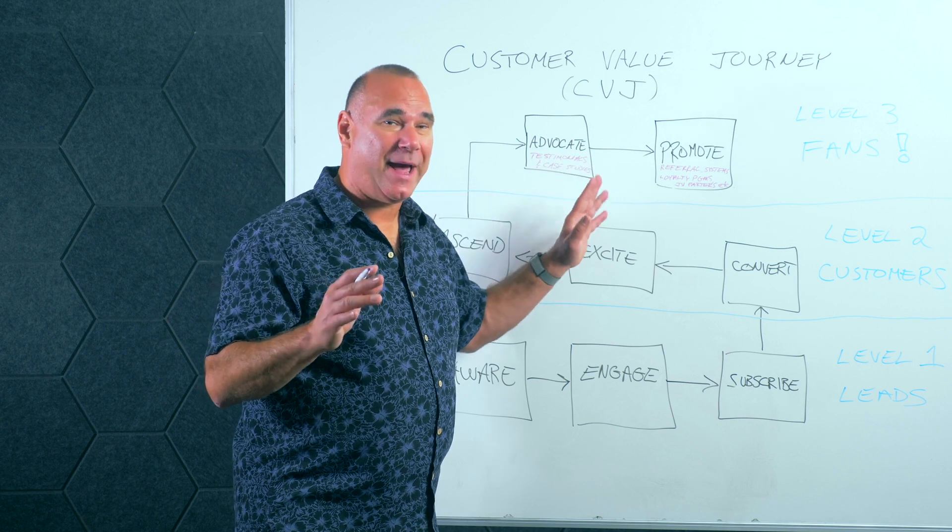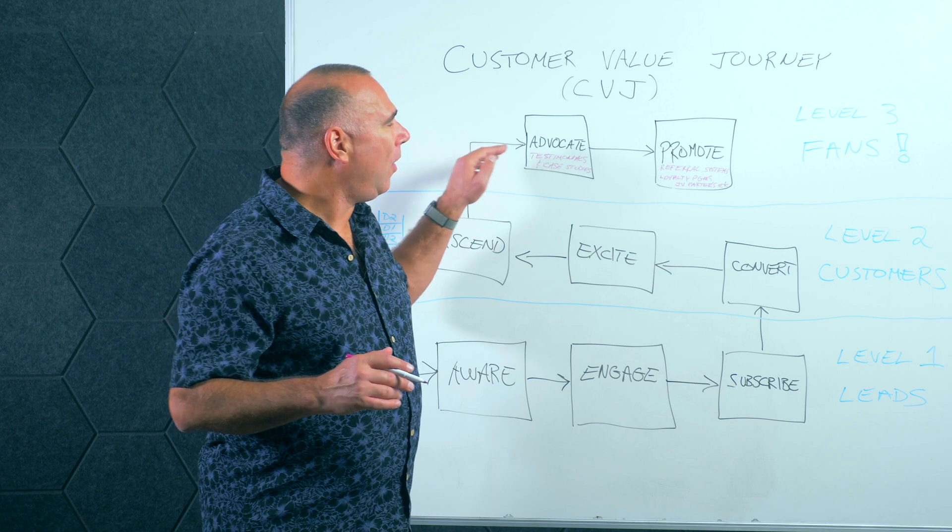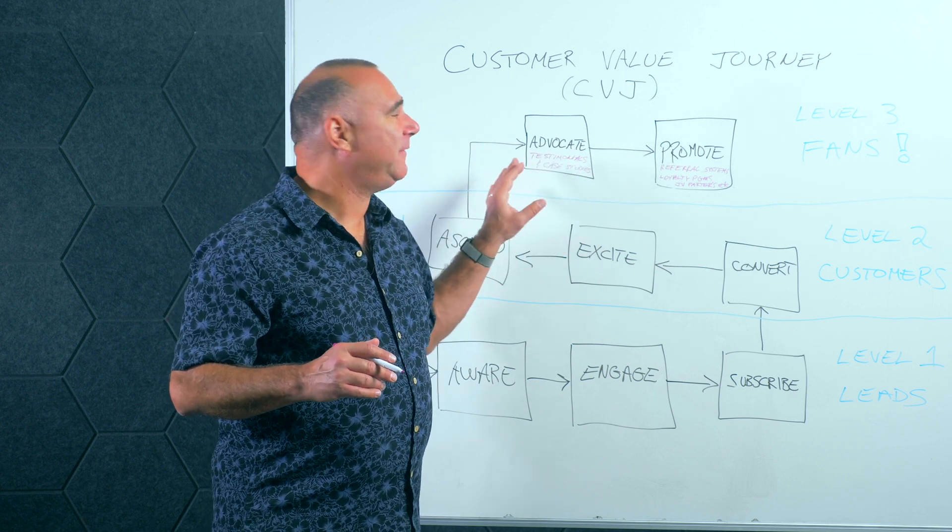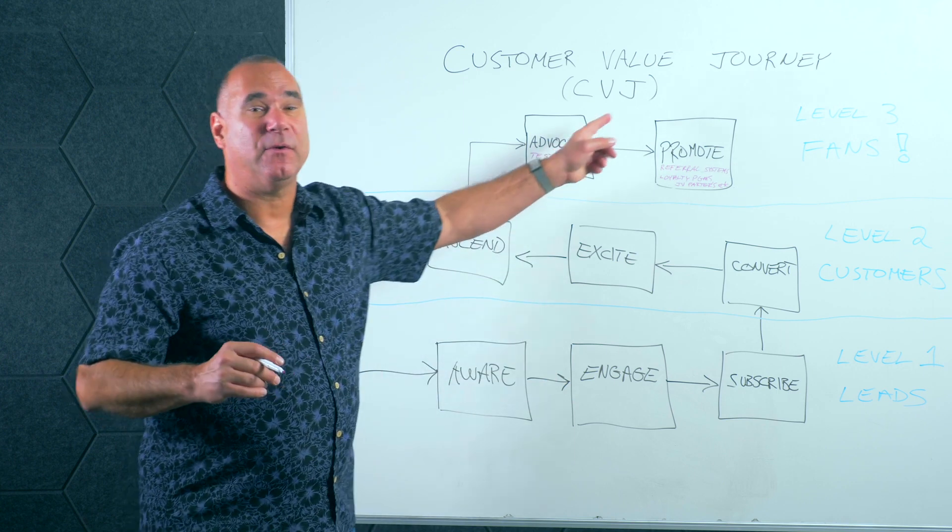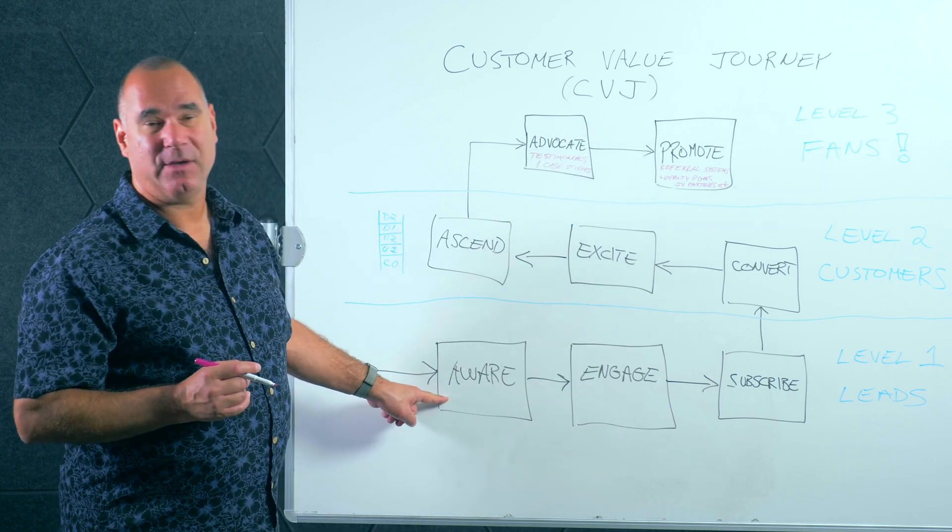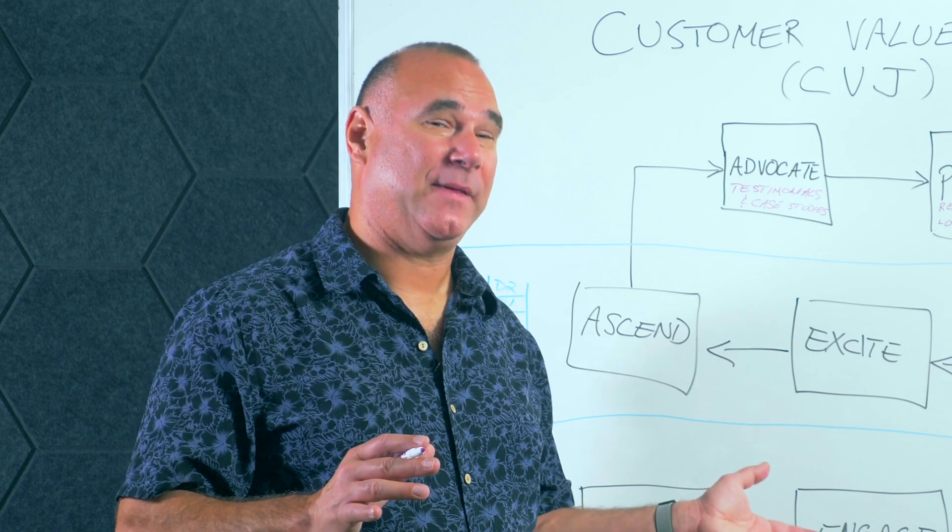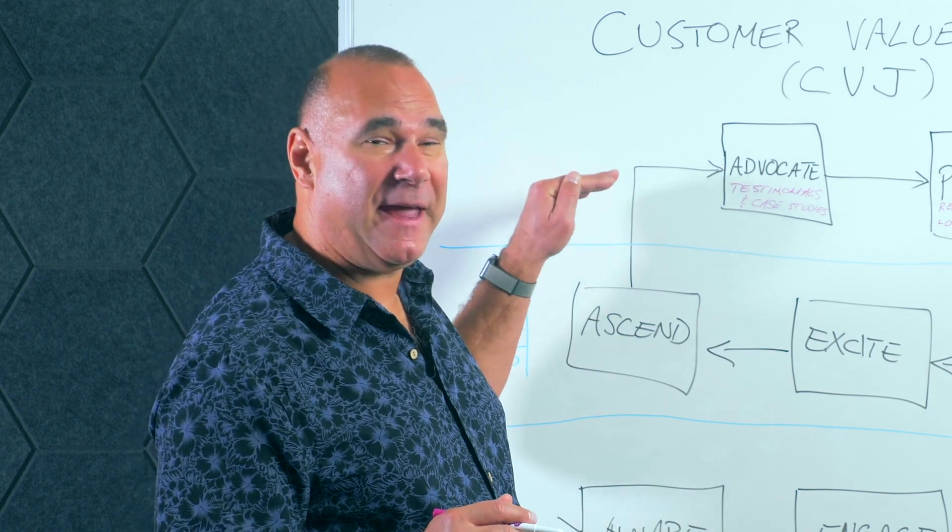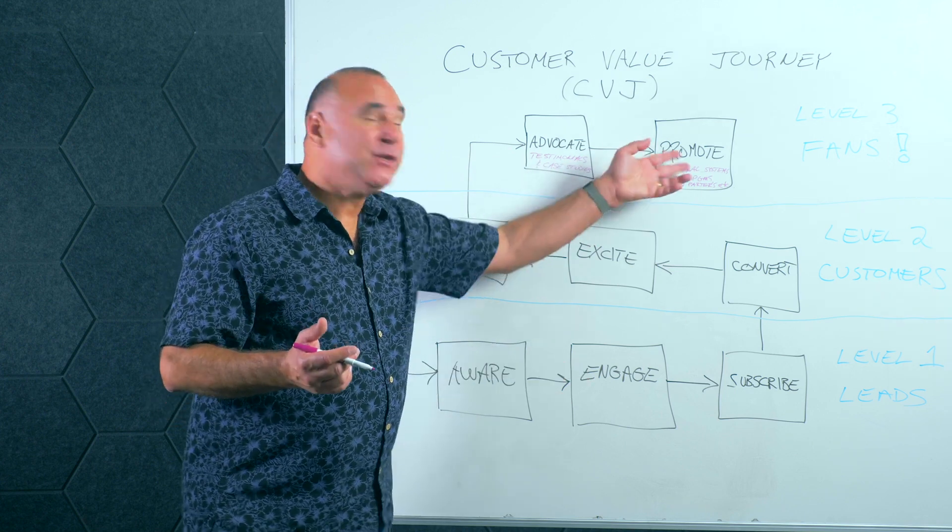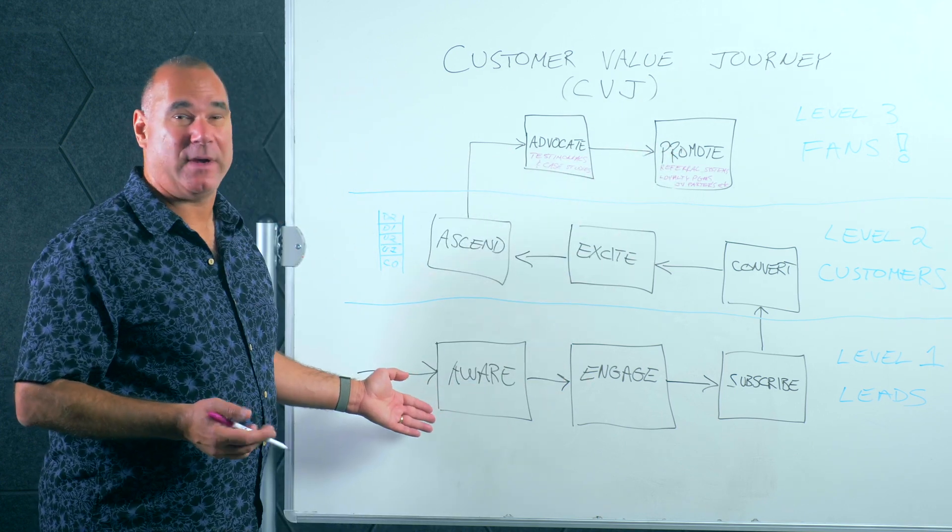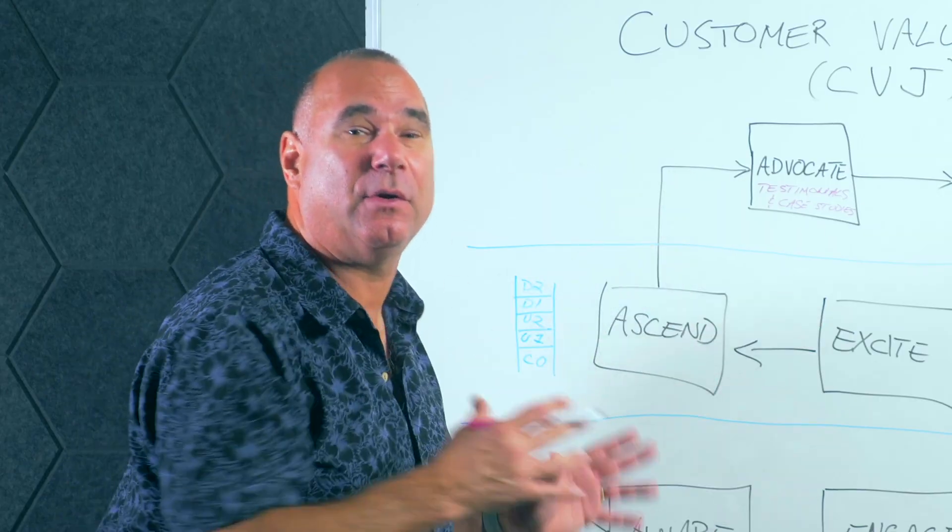Those types of activities at the Promote stage all drive—and this is the key—once you create these raving fans, all this promotion and advocacy drives, you guessed it, it comes full circle all the way back to awareness. Here's the cool thing about this entire adventure: once you create raving fans, advocates, and promoters, that all drives right back to stage 1, awareness. This entire thing becomes a circular loop and a closed system that drives your business forward.